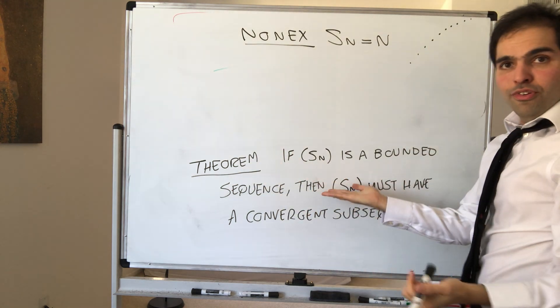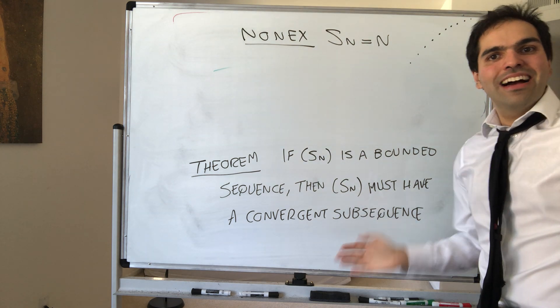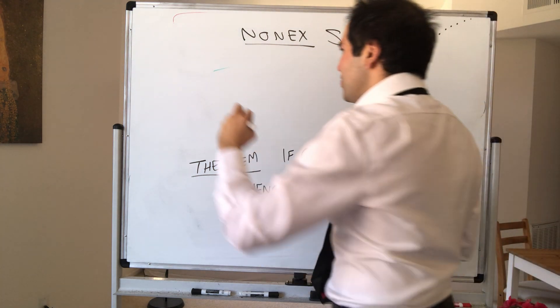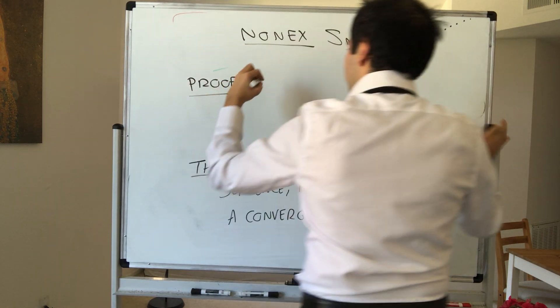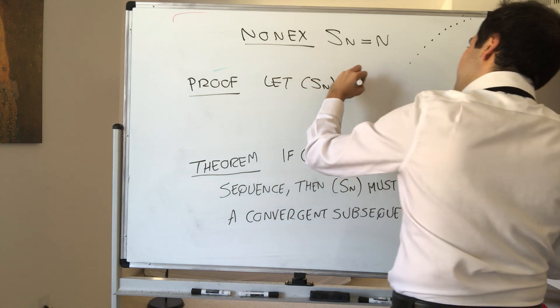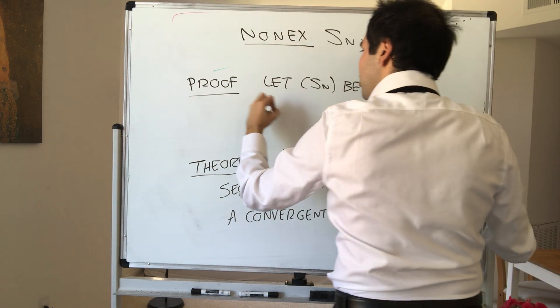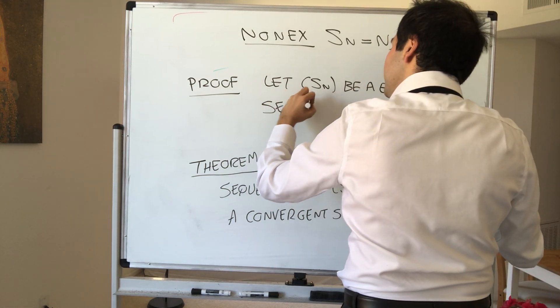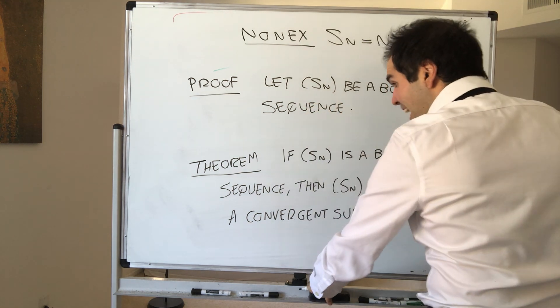All right, and now let's prove this, and the nice thing is, we've already done the hard work last time, so now it just flows like butter. So, proof: let Sn be a bounded sequence. And I would like to remind you, bounded means both bounded above and below.